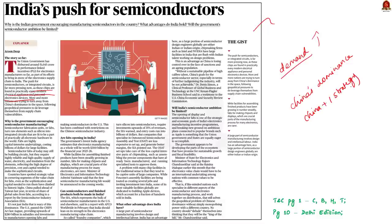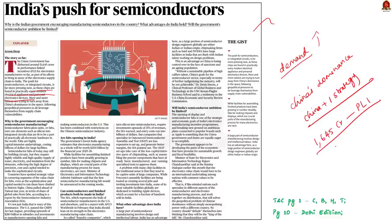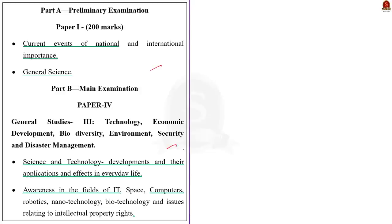Since it is the time to grow, even our union government has dispersed around 1,645 crore in performance-linked incentives for electronics manufacturers so far. This has been done to enhance India's participation in the electronic supply chain. This is the crux of the news article. In this context, let us understand a few facts about semiconductors and its uses. The syllabus relevant to this discussion is highlighted here.